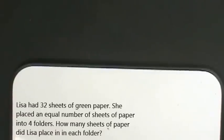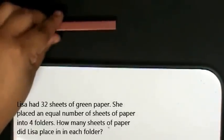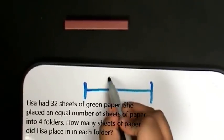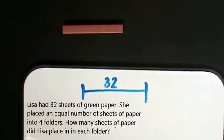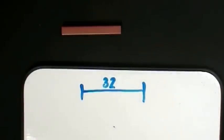Lisa had 30 sheets of green paper. This whole represents Lisa's 32 sheets of paper. She placed an equal number of sheets of paper into four folders.